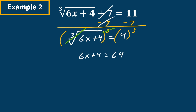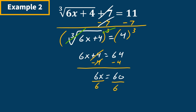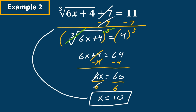Now we just isolate x. We subtract 4 from both sides — the 4s cancel — leaving 6x equals 60. Then we divide both sides by 6, the 6s cancel, and x is equal to 10. That's our solution. The last step is to plug it in and check — in this case it is correct, so x equals 10 is our final answer.